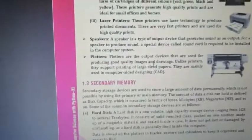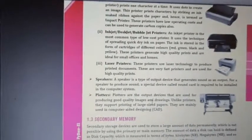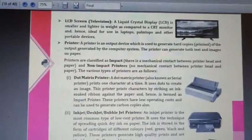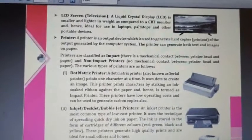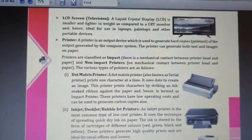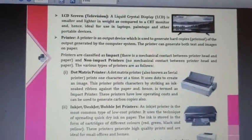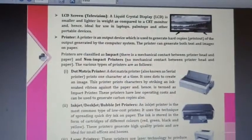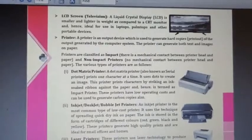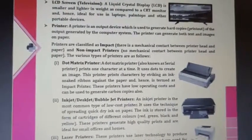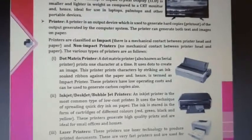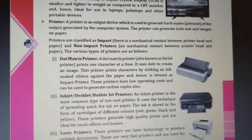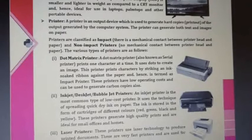The monitor, or Visual Display Unit, is an example of an output device — right now sharing the screen is also an example of an output device. Next is printers. A printer is an output device that produces output in the form of hard copies. There are different types of printers.